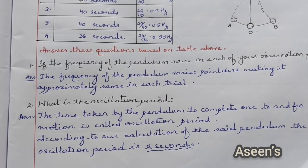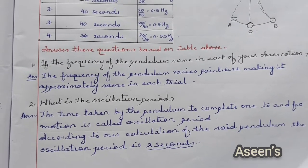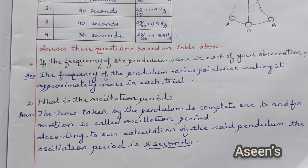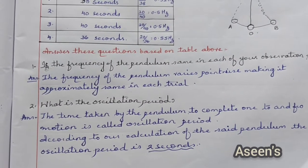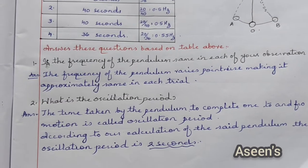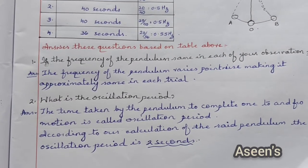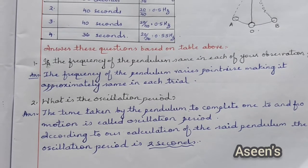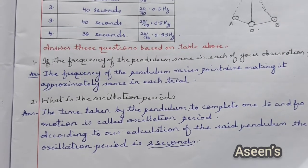Second question: what is the oscillation period? The time taken by the pendulum to complete one to-and-fro motion is called oscillation period. According to our calculation of the set pendulum, the oscillation period is 2 seconds.